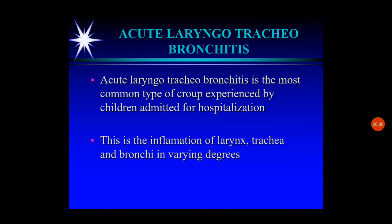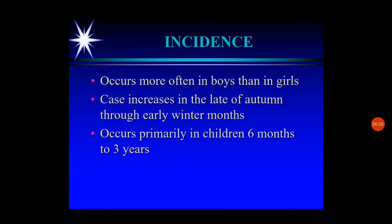Acute laryngotracheobronchitis is the most common type of CROUP experienced by children admitted for hospitalization. It is an inflammation of the larynx, trachea, and bronchi in varying degrees. Regarding incidence: it occurs more commonly in boys than in girls; cases increase in late autumn through early winter months, indicating seasonal variation; and it occurs primarily in children aged six months to three years, with very small children affected more commonly than older ones.